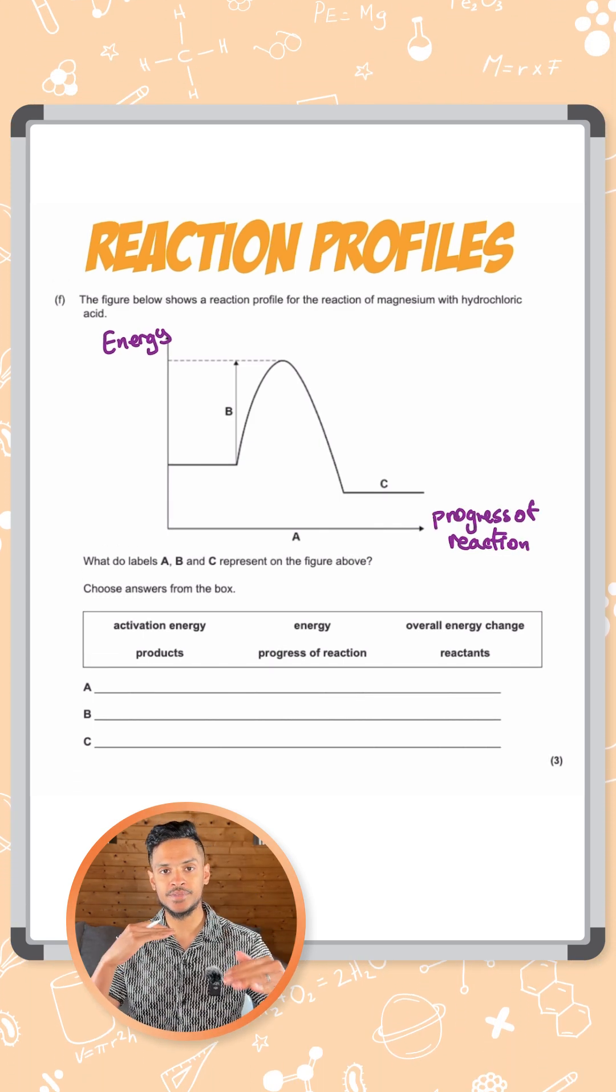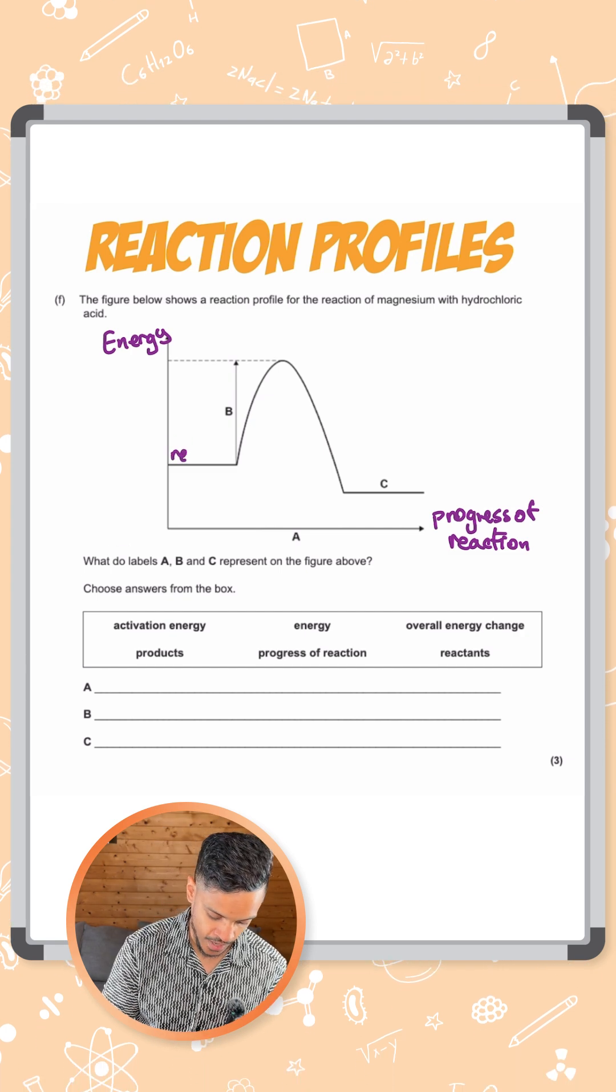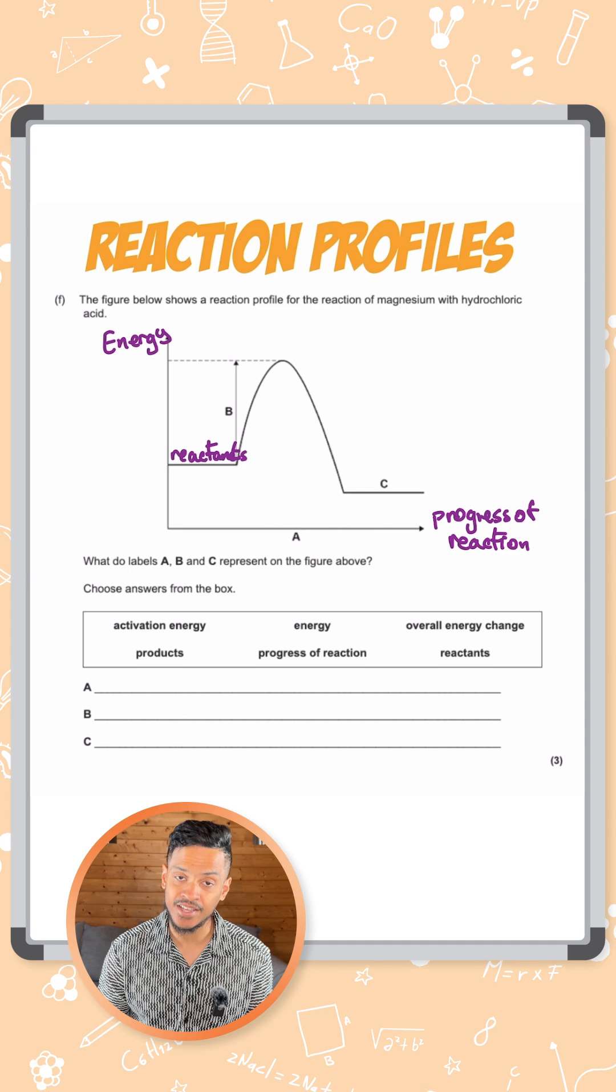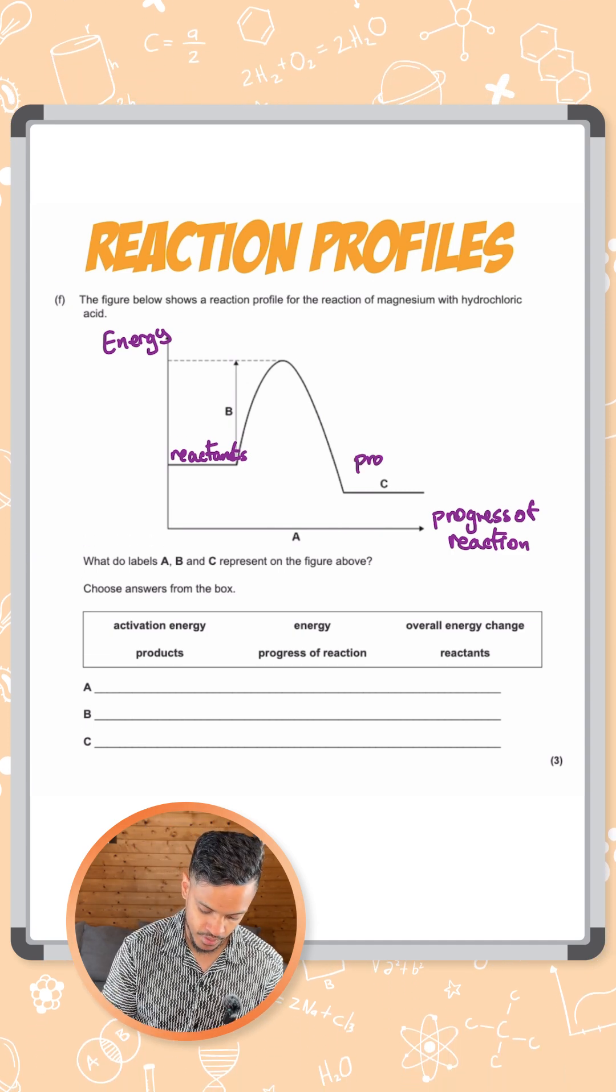Then we have two flat bits. The one on the left is the energy of the reactants, so we'll label that as reactants. Then the second flat bit on the right is the products.